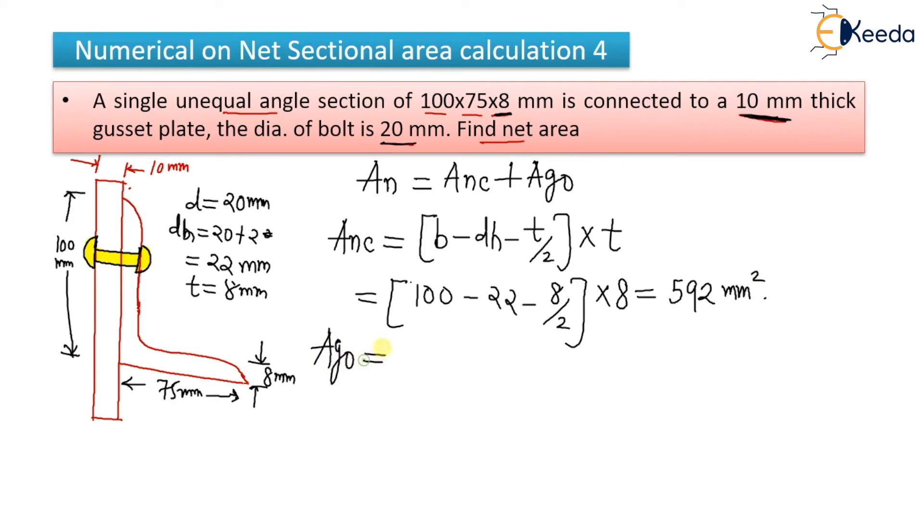Then A_GO, that is gross area of outstanding leg. So you will not deduct this DH because there is no hole here. So I will just put B minus T by 2 into T. So how much is the value? You can calculate here. What is the value of B here? It is 75 minus 8 by 2 bracket close into 8. So it will come around 568 mm square.